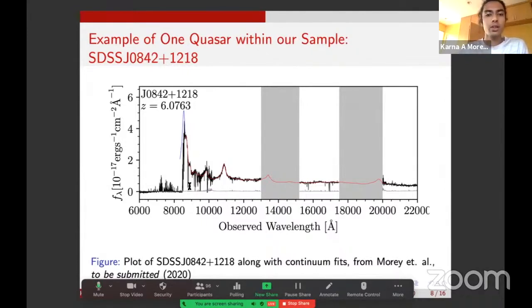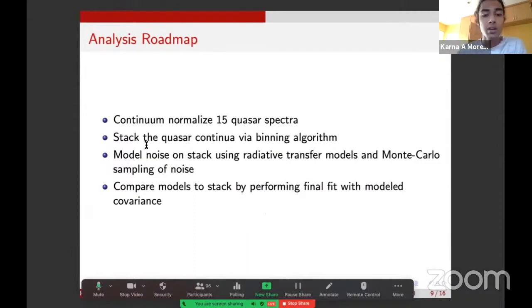The analysis roadmap is we first continuum normalize all the 15 quasar spectra using our continuum fits. We then stack the quasar continua via a binning algorithm. To understand the uncertainty on these quasar stacks, we forward model the noise, the different sources of uncertainty in our analysis, using the radiative transfer models. We can Monte Carlo sample each of the sources of uncertainty and forward model them onto these models to understand what the uncertainty is and to get covariance matrices. Then we can compare the models to the stack by performing a final fit with our modeled covariance matrices and basically estimate the lifetime directly.